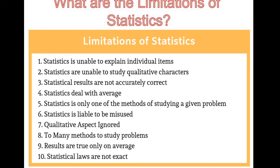The eighth limitation: too many methods to study a problem. In this subject, we use so many methods to find a single result. For example, variation can be found by quartile deviation, mean deviation, or standard deviation, and results vary in each case.